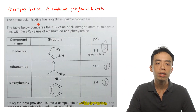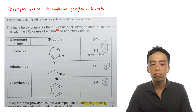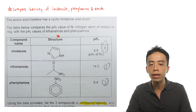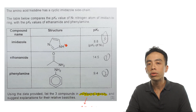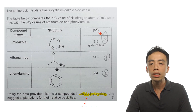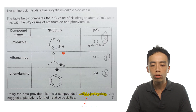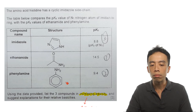The question states that the amino acid histidine has a cyclic imidazole side chain. The table compares the pKB value of the N1 nitrogen atom of the imidazole ring with the pKB values of ethanamide and phenylamine. Imidazole N1 has a pKB of 8.8, ethanamide has a pKB of 14.5, and phenylamine has a pKB of 9.4. Using this data, we list the three compounds in increasing basicity and explain their relative basicity.